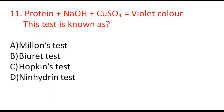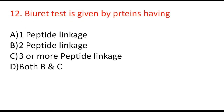Next question: protein + NaOH + copper sulfate gives a violet color — this test is known as Millon's test, Biuret test, Hopkins test, or Ninhydrin test? The correct option is B, Biuret test. The Biuret test is given by proteins having 2 or more peptide linkages — so both B and C (2 peptide linkages, and 3 or more) are correct, making option D the answer for that sub-question.